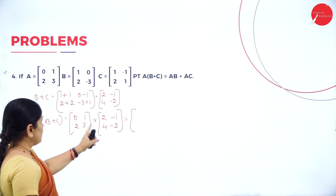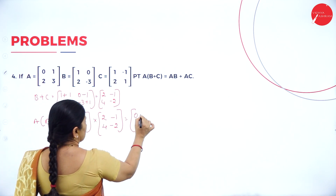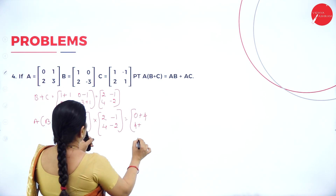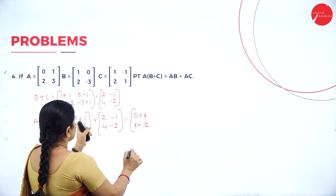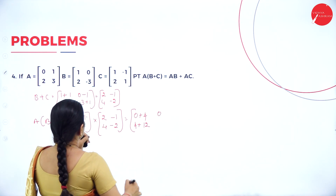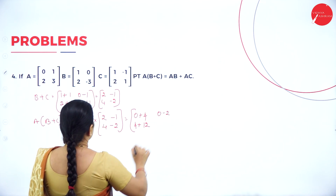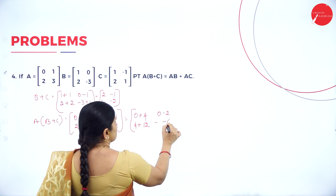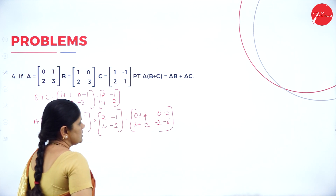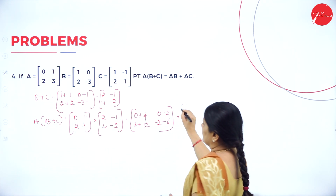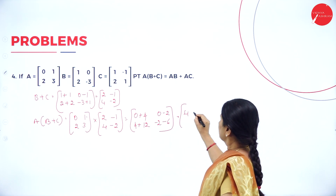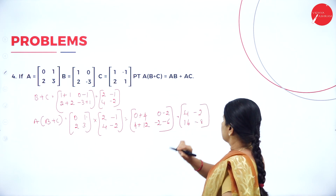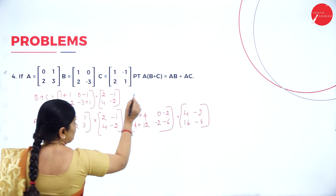Now A into (B+C) equals [0, 1; 2, 3] multiplied by [2, -1; 4, -2]. First row, first column: 0×2 plus 1×4 equals 4. Second row: 2×2 plus 3×4 equals 16. First row, second column: 0×(-1) plus 1×(-2) equals -2. Second row: 2×(-1) plus 3×(-2) equals -8. So A(B+C) equals [4, -2; 16, -8].